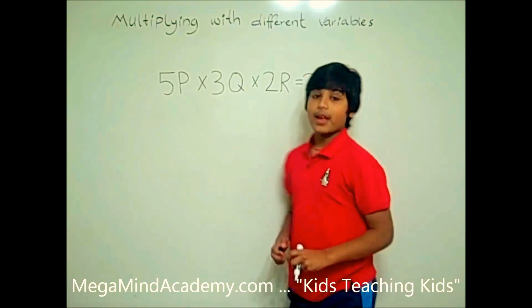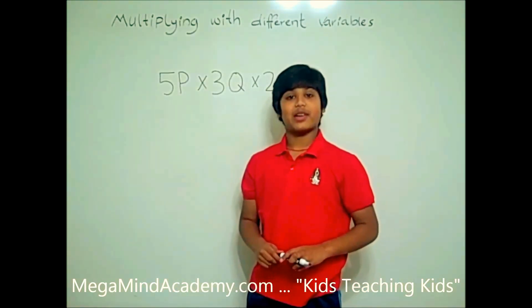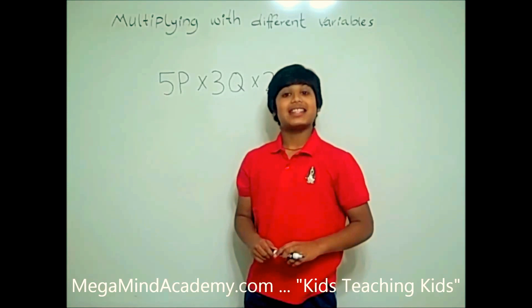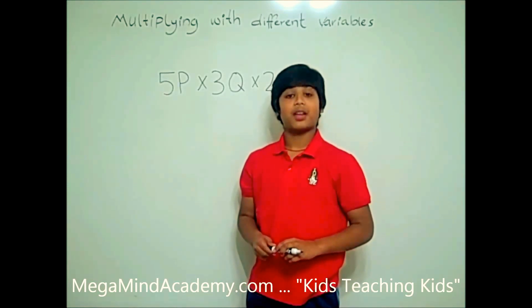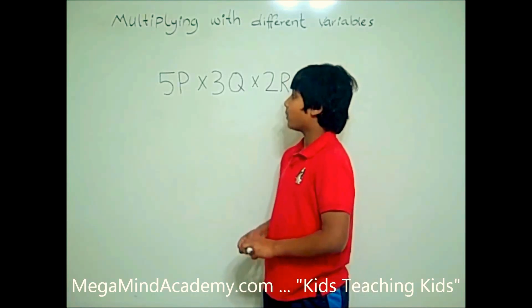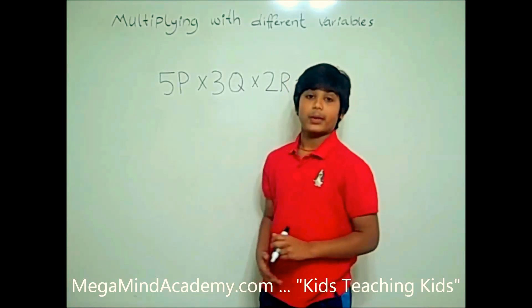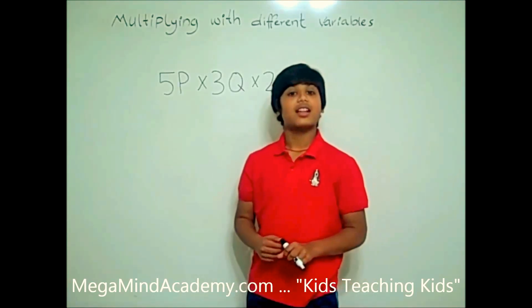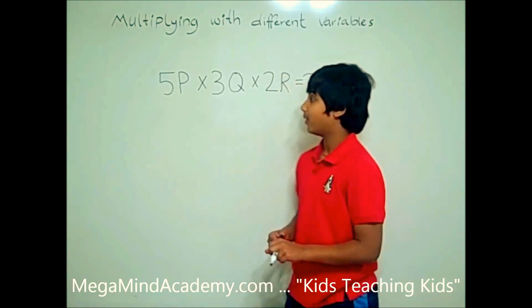Multiplying with different variables is as easy as multiplying with regular numbers. All you have to do is multiply the variables with the numbers. Let me show you how.